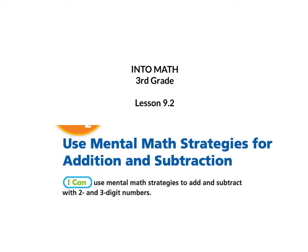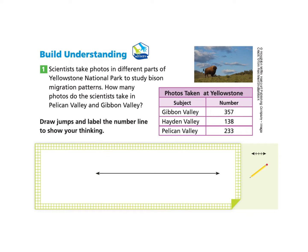This is IntoMath 3rd grade lesson 9.2: Use mental math strategies for addition and subtraction. I can use mental math strategies to add and subtract with two and three digit numbers. Please gather your workbook and a pencil and turn to page 246. We will begin under Build Understanding Part 1.